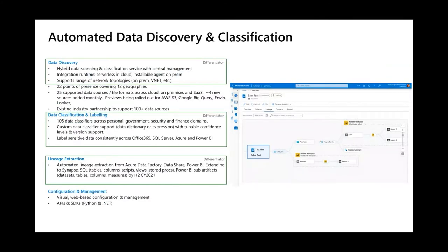The lineage view shows where data originates. Extended using Synapse and Azure Data Factory, you can see copy commands, where information went — for example, to a Power BI workspace — and what reports it flows into. You can also switch to a column view to look at a specific column from the sales fact table and see exactly which processes it impacts, so if you change a column you know your downstream impacts.